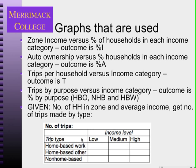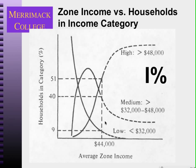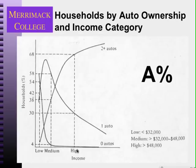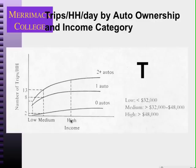So I can fill out a table — that's the bottom line. This is the first graph, and we'll go through an example. Let's say the average income is $44,000. I can use this graph to find that 51% of households are high-income households. I also know that 68% of high-income households own two or more cars, and for high-income households owning one car there are about 12 or 13 trips per household made each day.